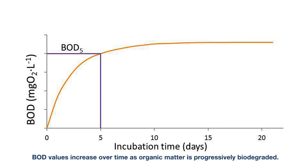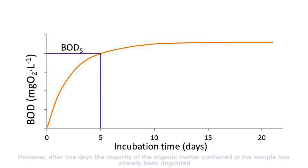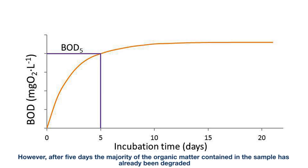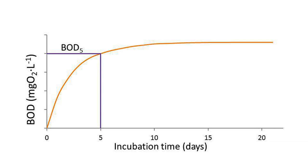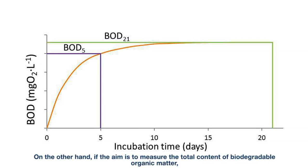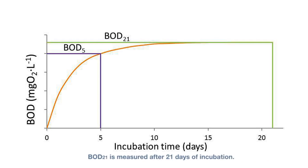BOD values increase over time as organic matter is progressively biodegraded. However, after five days, the majority of the organic matter contained in the sample has already been degraded. For that reason, BOD5, which is measured after five days of incubation, is the most widely used method. On the other hand, if the aim is to measure the total content of biodegradable organic matter, BOD21 is measured after 21 days of incubation.